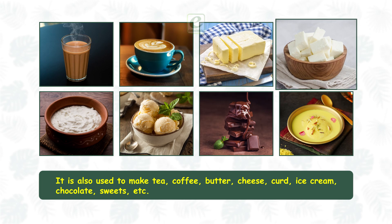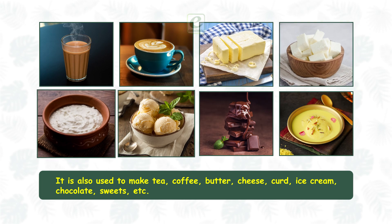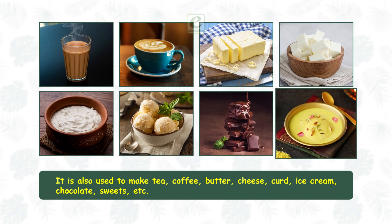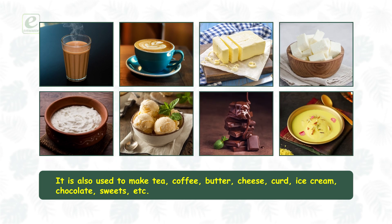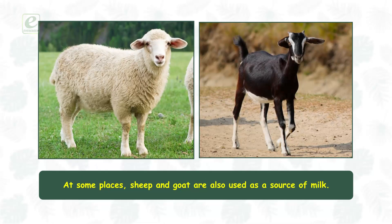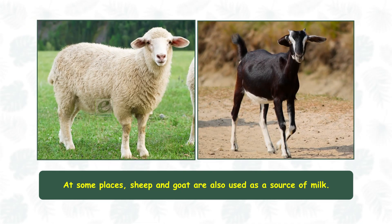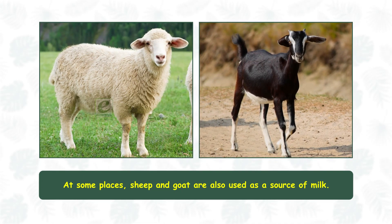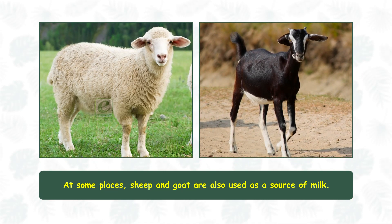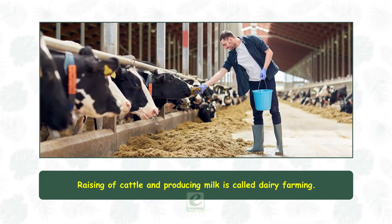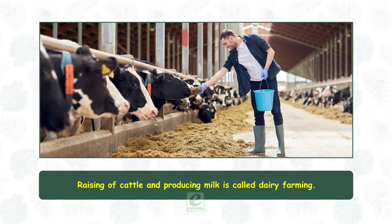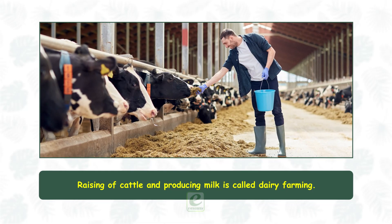Milk is used to make butter, cheese, curd, ice cream, chocolate, sweets, etc. At some places, sheep and goat are also used as a source of milk. Raising cattle and producing milk is called dairy farming.